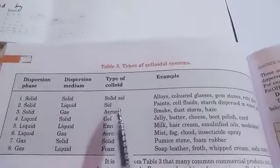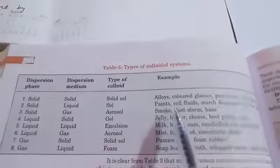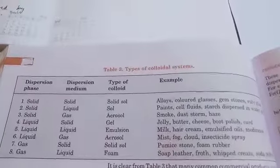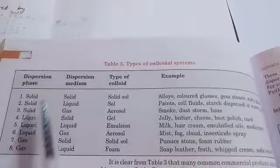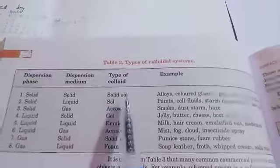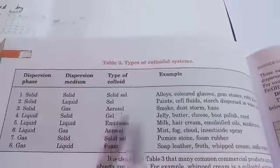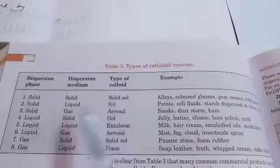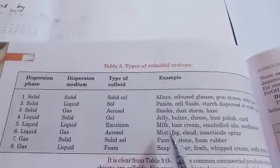Now if dispersed phase is solid, dispersion medium is liquid, the type of colloid is sol. For example, it's a paint, cell fluids, etc. Now that another one is if dispersion phase is solid, dispersion medium is gas, so we have type of colloid that one is aerosol. Example: smoke, dust storm, haze, like this. It's simple, we have eight types of colloids, and that you have to learn.